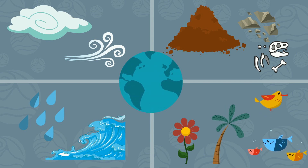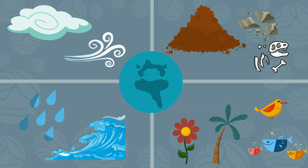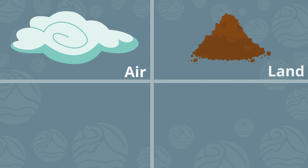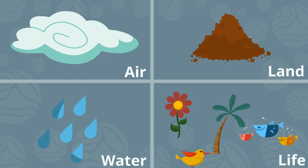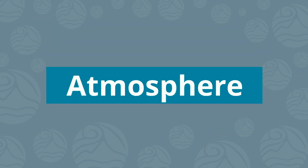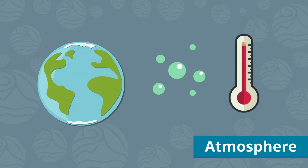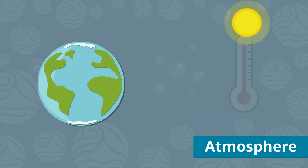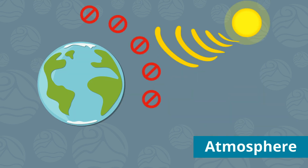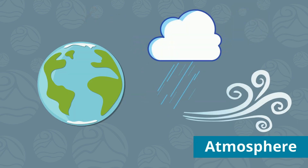The four main systems or spheres are air, land, water, and life. The air system is called the atmosphere. It contains gases, regulates temperature, and blocks radiation, houses weather and wind, and drives climate systems on earth.